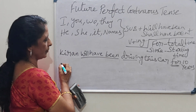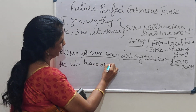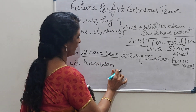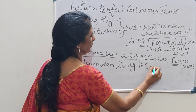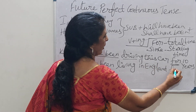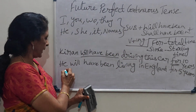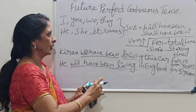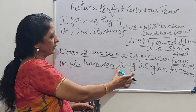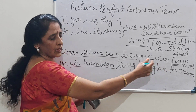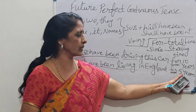Seventh example: 'He will have been living in England for five years.' Subject 'he,' then 'will have been' for Future Perfect Continuous Tense, then 'living' — verb plus ing — 'in England for five years.' Total time is five years, so we use 'for.'